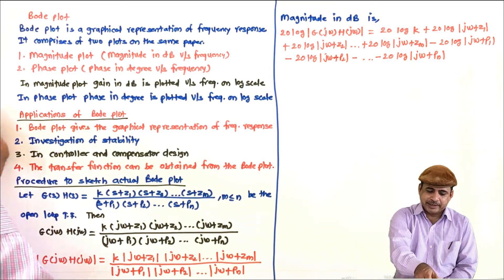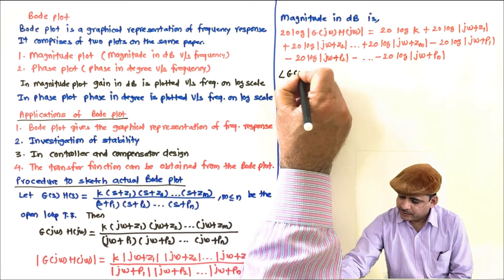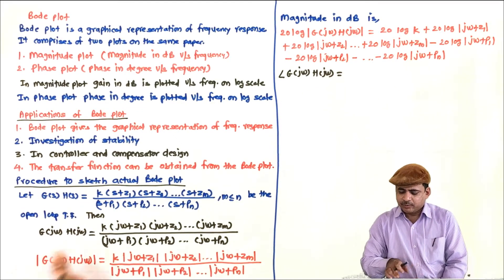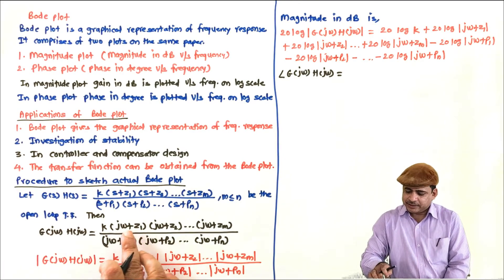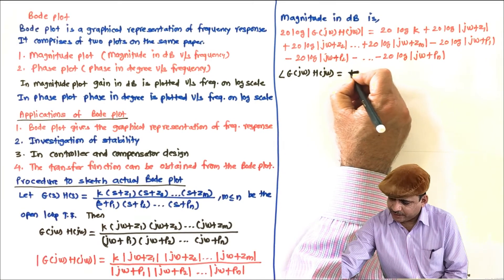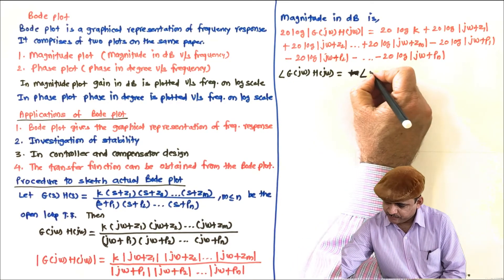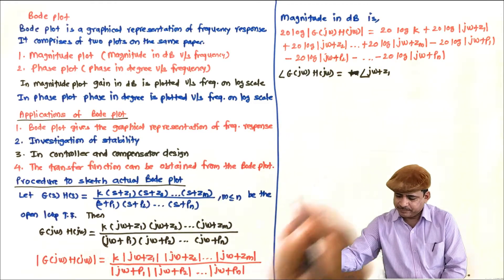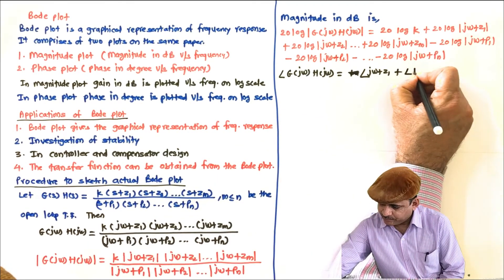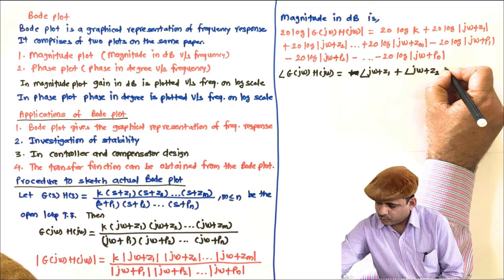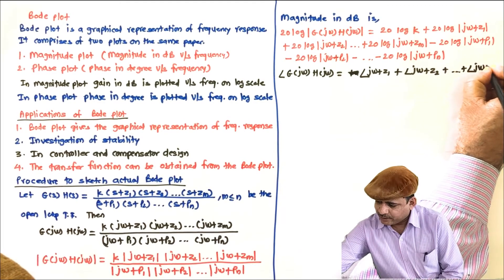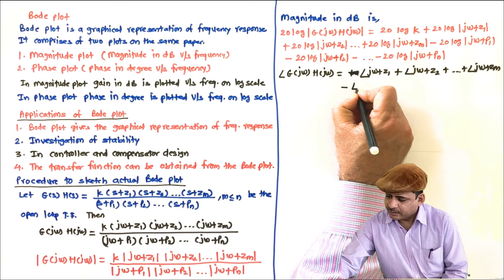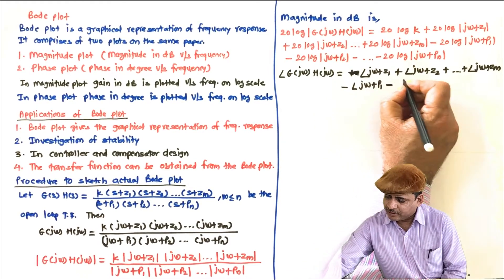Now if we want to find the phase: the phase of G(jω)H(jω) — for K, if it is a positive number, there is no phase contribution. The phase is the angle of (jω + Z1) plus the angle of (jω + Z2) and so on up to angle of (jω + Zm) — that is, addition of angles of all zeros — minus the addition of angles of all poles.